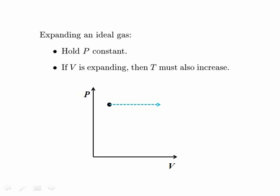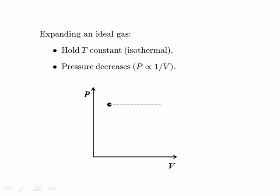Another option is to hold the temperature constant — an isothermal process. As Boyle's Law tells us, if temperature is constant, pressure decreases as volume increases, proportional to 1 over the volume. In the PV plane, the state traces out a downward swooping curve — in fact, a hyperbola. All points along that curve are points where the temperature is the same.